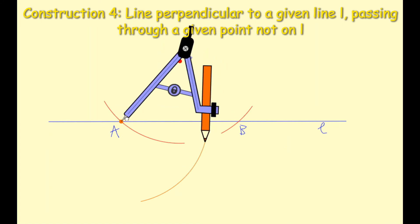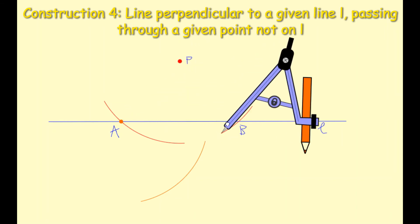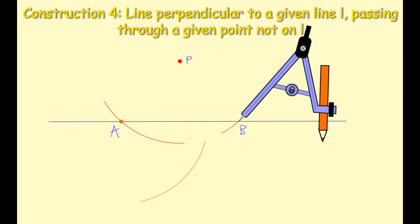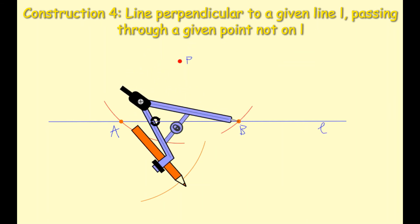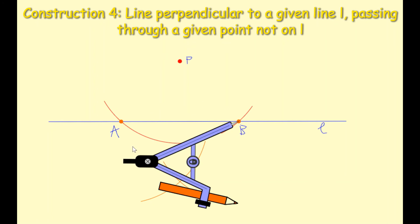I'm now going to bring the nib of my compass over to B and draw an arc which intersects that arc and it looks something like that. Okay so my two arcs are now going to intersect. I'm going to remove my compass so you can see what it looks like.